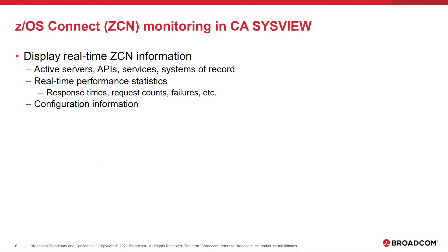SysView provides several commands that are specific to showing ZOS Connect information. You can see information about the active ZOS Connect servers running on your systems, ZOS Connect APIs, services, and systems of record. On these displays you can see real-time performance statistics like response times, request counts, failures, and much more. On these displays you can also see static configuration information about your ZOS Connect servers.